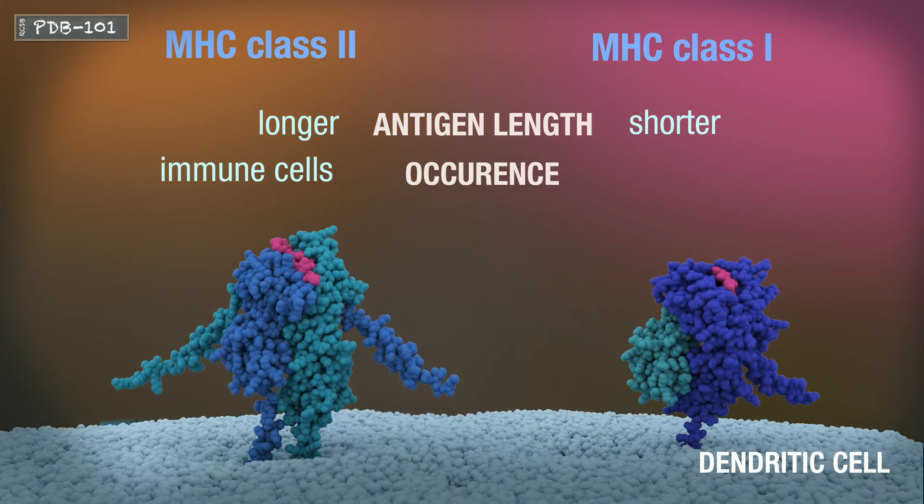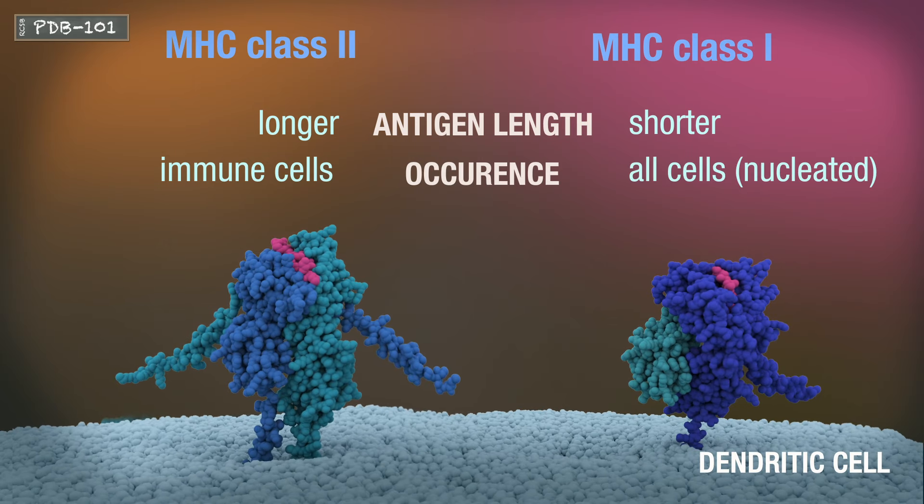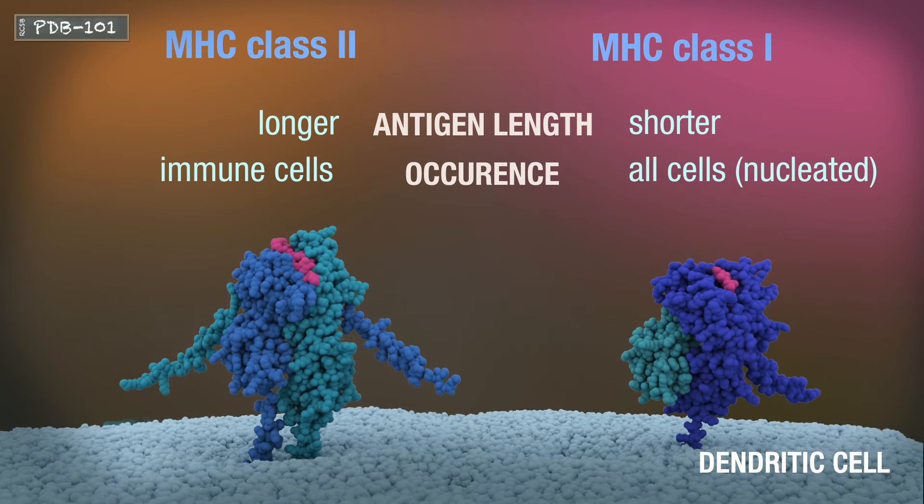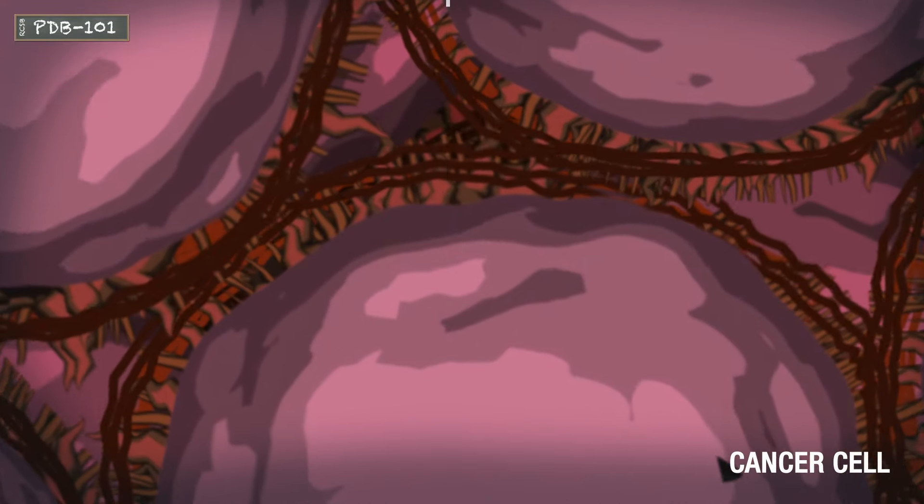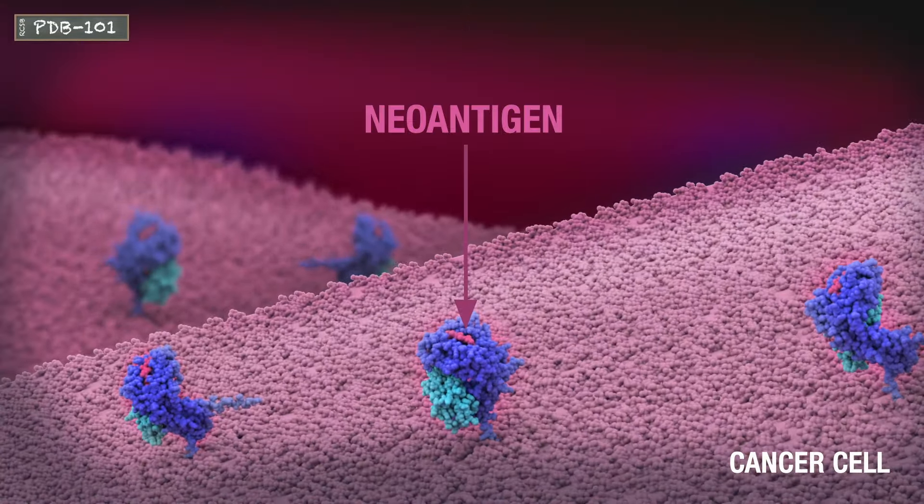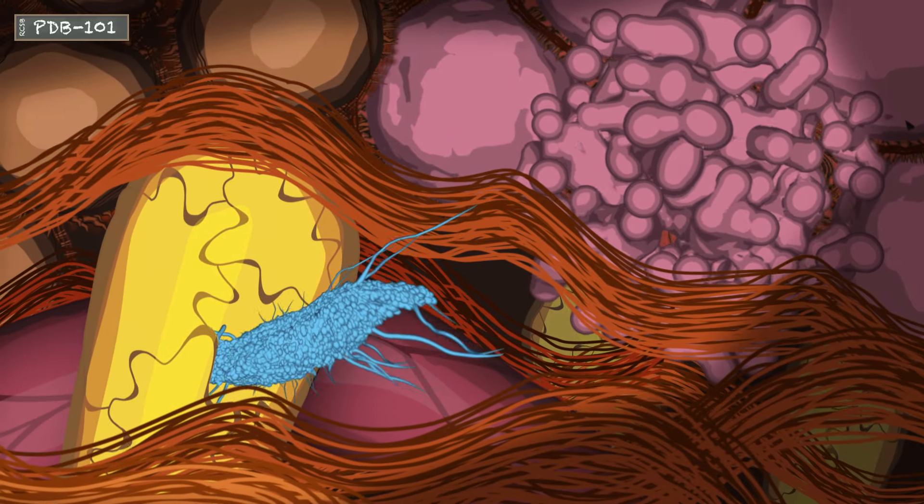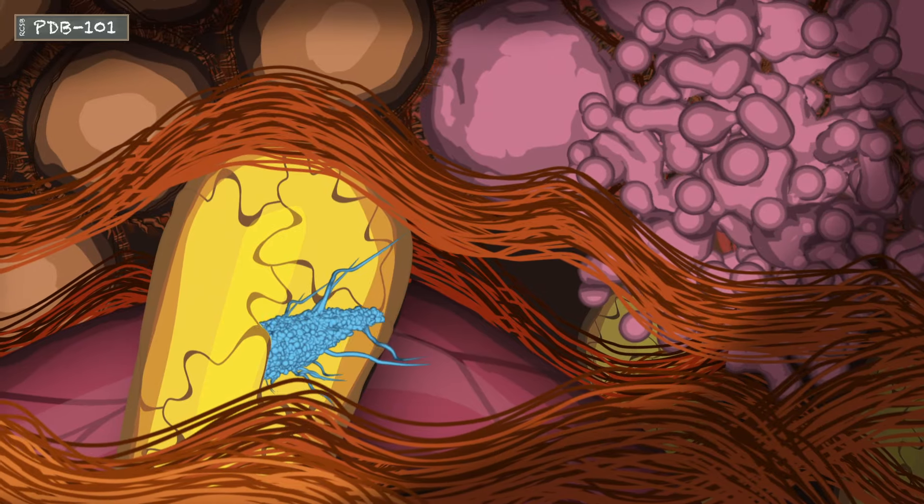MHC2 is limited to antigen presenting cells such as dendritic cells. MHC1 is found on most human cells, immune or otherwise. MHC1 found on cells other than immune cells will contain peptides from the cell's own degraded proteins. The antigen-loaded dendritic cell travels to the lymphatic system.